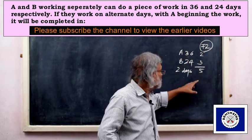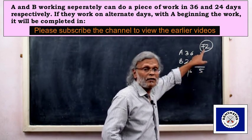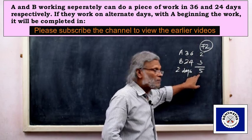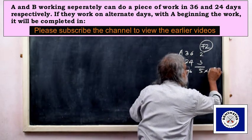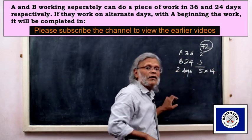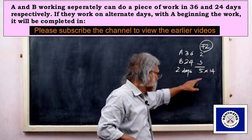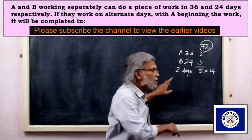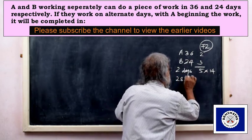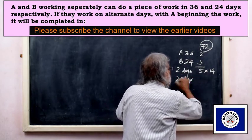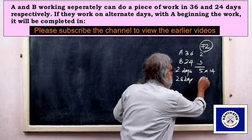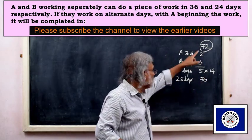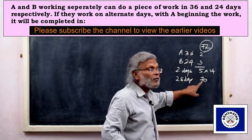14 pairs of days means 28 days, completing 70 units. Remaining work is 72 minus 70 equals 2 units. On day 29, A works and does 2 units, completing the work. Total time is 29 days.